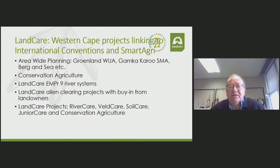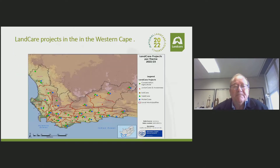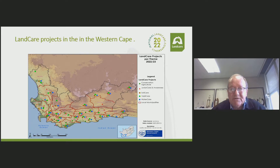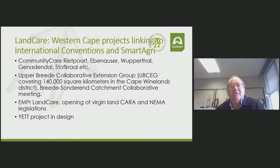The Land Care area-wide planning projects bring in all the buy-in from landowners and move toward restoration. Our other Land Care projects — river care, health care, junior care, and conservation agriculture — link very well together. Across the Western Cape boundary you can see all the soil care, field care, and water care projects, as well as junior Land Care and conservation agriculture. Having officials out in the field — not just in head office — is what makes the difference in border areas.